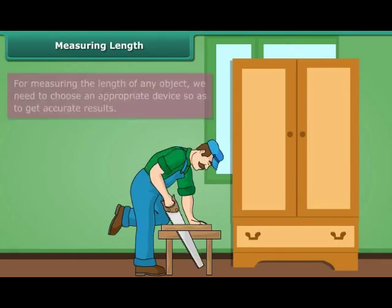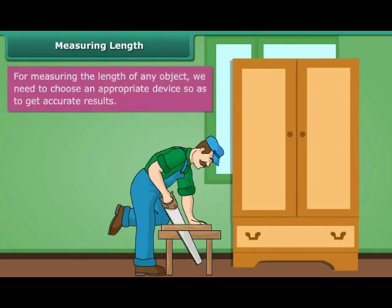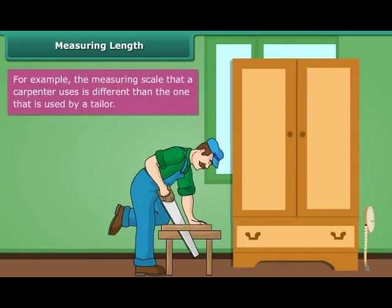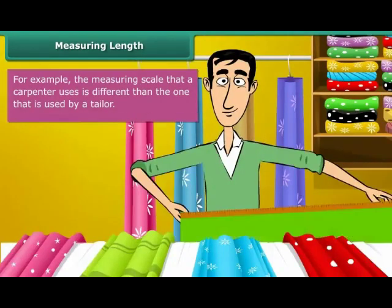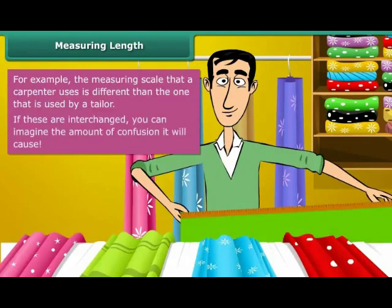Measuring Length. For measuring the length of any object, we need to choose an appropriate device so as to get accurate results. For example, the measuring scale that a carpenter uses is different than the one used by a tailor. If these are interchanged, you can imagine the amount of confusion it will cause.